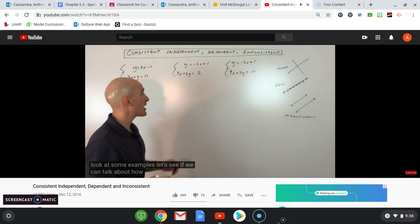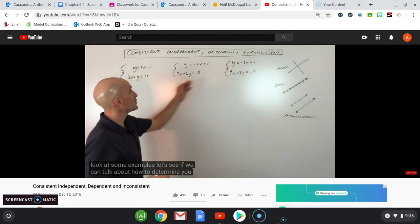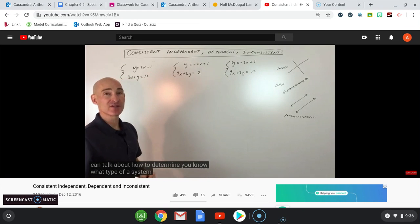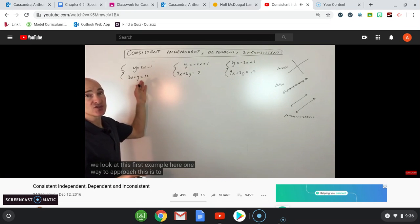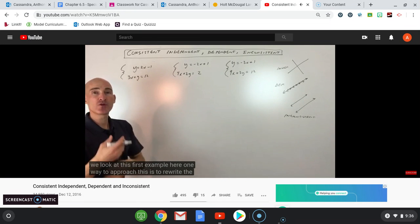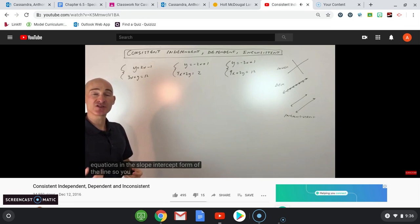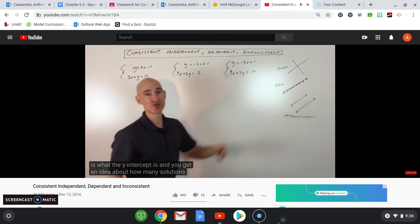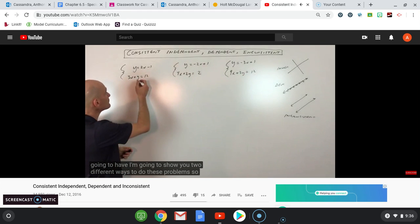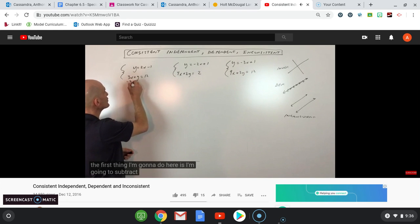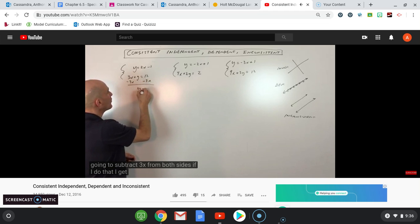Let's look at some examples and talk about how to determine what type of system this is. One way to approach this is to rewrite the equations in slope-intercept form so you can tell what the slope is, what the y-intercept is, and get an idea about how many solutions they're going to have. Subtracting 3x from both sides, I get y equals negative 3x plus 12.